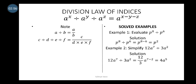The division law of indices states that a raised to power x, divided by a raised to power y, divided by a raised to power z, is equal to a raised to power x minus y minus z. On the left-hand side, the index numbers share the same base a. The law says: if you have such a situation, pick only one base and subtract all the powers — giving base a raised to the power x minus y minus z.